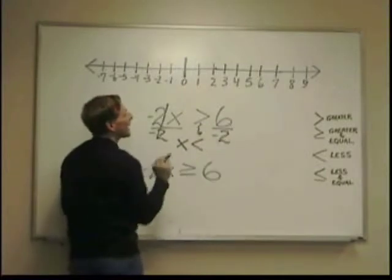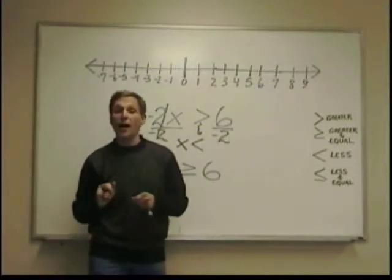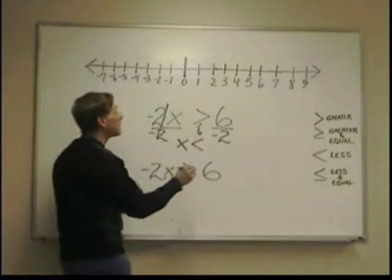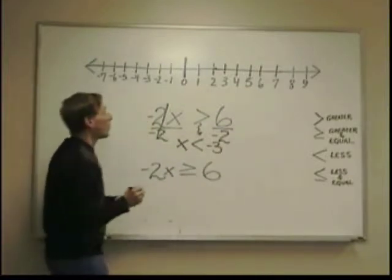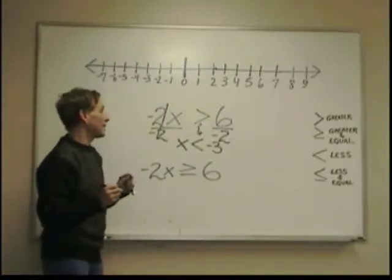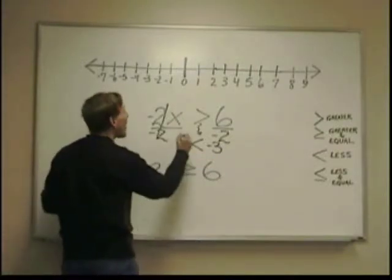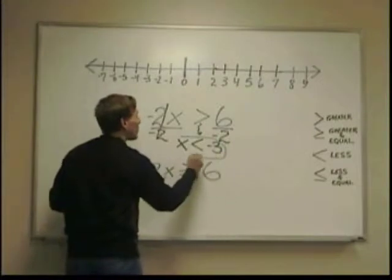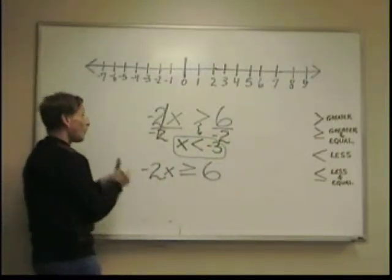And 6 divided by negative 2, remember your rules of division of sign numbers. What I'm going to use there, unlike gives me a negative 3. So, x is less than negative 3. And that is my solution. And I'm going to plot this on the number line. x is less than negative 3. But before I do, I want to check.